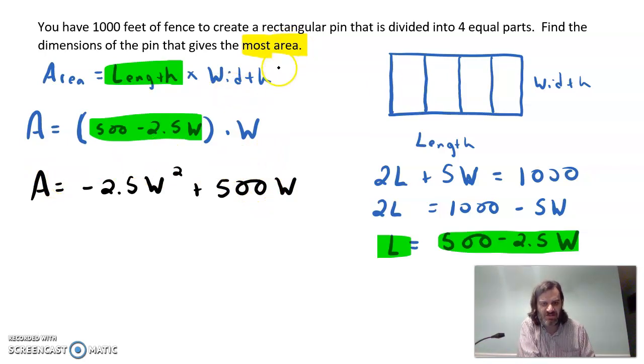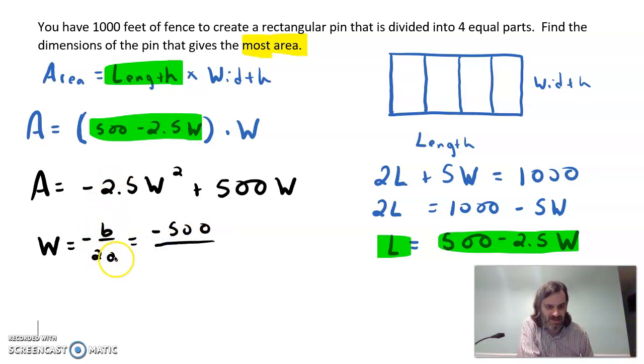So when we talk about most, we're talking about the vertex. So in this case, that would be W equals negative B over 2A. And my B is 500, so it'll be negative 500 all over 2A. A is negative 2.5. So two times that will be negative 5. So if I divide that out, I'll have 100.